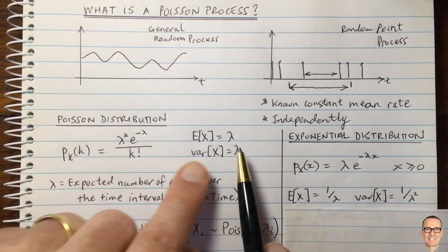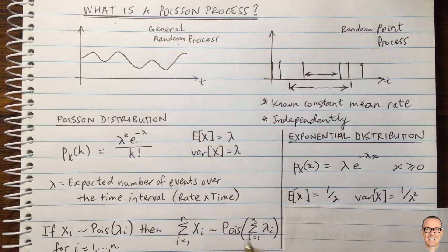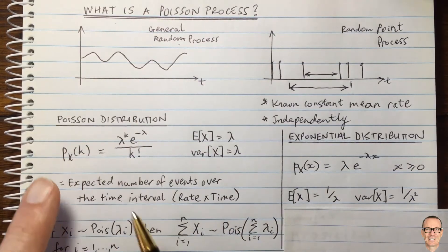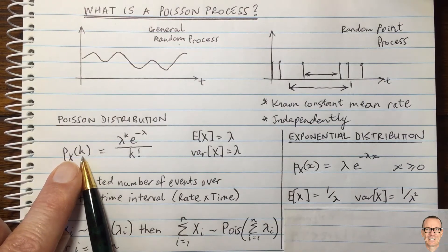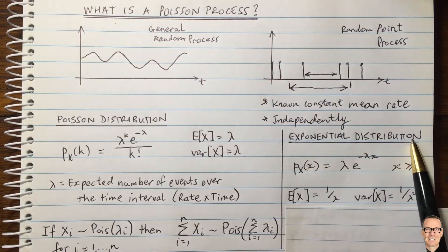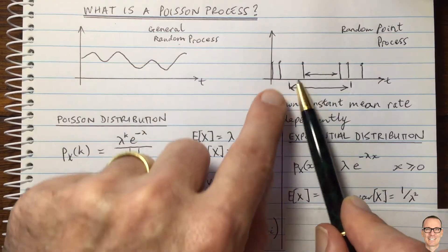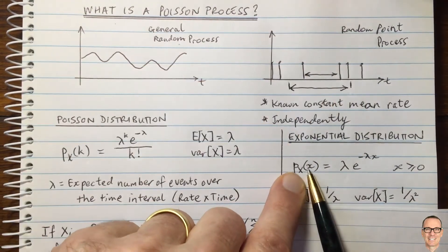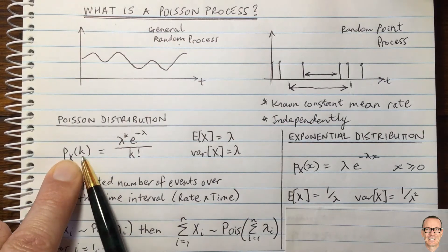So the standard deviation equals the expected value for the exponential distribution, whereas for the Poisson distribution it was the variance that equalled the expected value — this is often a source of confusion between the two. To be clear: the Poisson distribution is about a discrete number of events happening over a time period, whereas the exponential distribution is a continuous distribution for the time between events. So x is a continuous parameter in the exponential case, and k is a discrete parameter in the Poisson case.